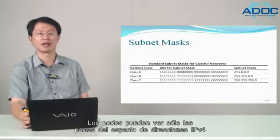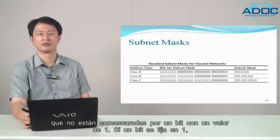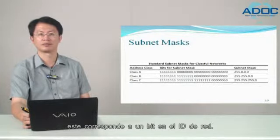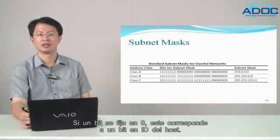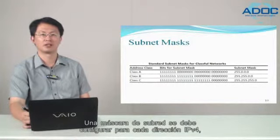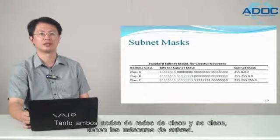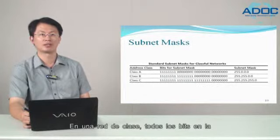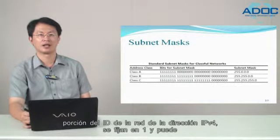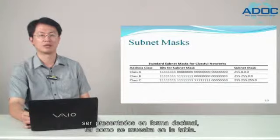The subnet mask identifies which bits of the IPv4 address belong to the network ID and which bits belong to the host ID. Nodes can see only the portions of the IPv4 address space that aren't masked by a bit with a value of 1. If a bit is set to 1, it corresponds to a bit in the network ID. If a bit is set to 0, it corresponds to a bit in the host ID. A subnet mask must be configured for each IPv4 address. Nodes on both classful and non-classful networks have subnet masks. On a classful network, all bits in the network ID portion of the IPv4 address are set to 1 and can be represented in dotted decimal form, as shown in the table.